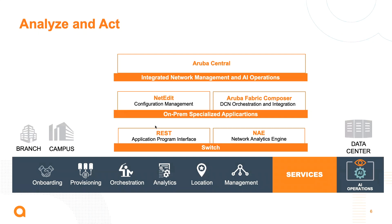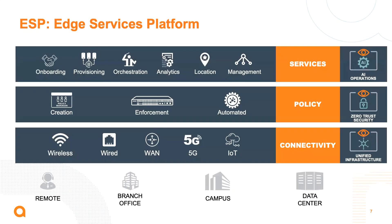Putting the three levels together, we see the whole ESP architecture. At the basis we find the connectivity elements that build a unified infrastructure. Then we find the policy layer aimed at zero-trust security. And finally, the services layer where intelligence is added to manage, orchestrate, and provision the networks and their devices. Intelligence to analyze and act is distributed across all levels — inside the switch with NAE, at the policy level with ClearPass and colorless ports, and at the services level with Aruba Central. Thank you, Ruben, for talking about the Edge Services Platform and how switching fits into the unified infrastructure portion of ESP.